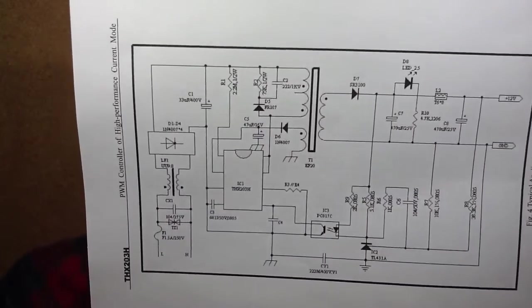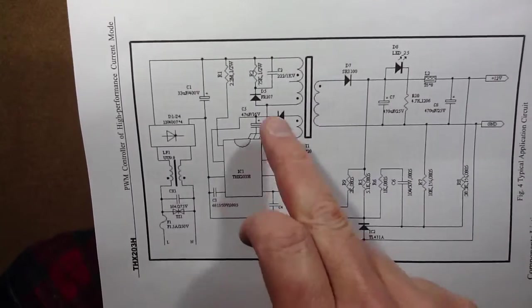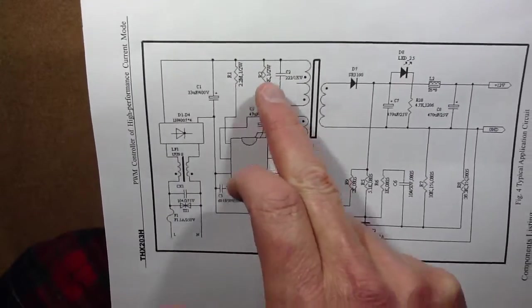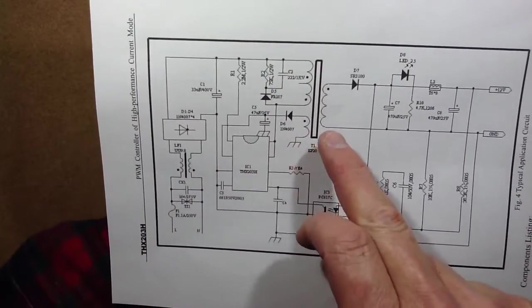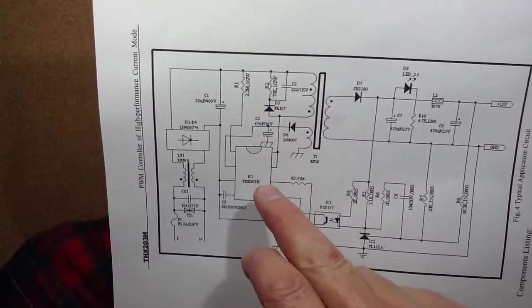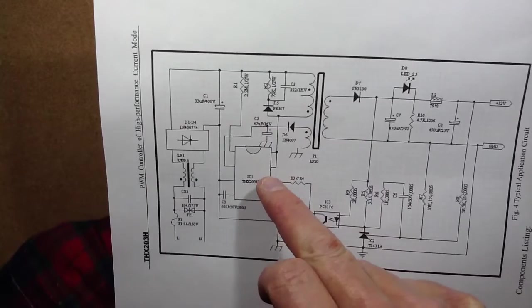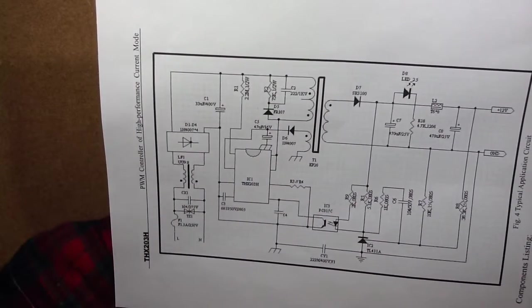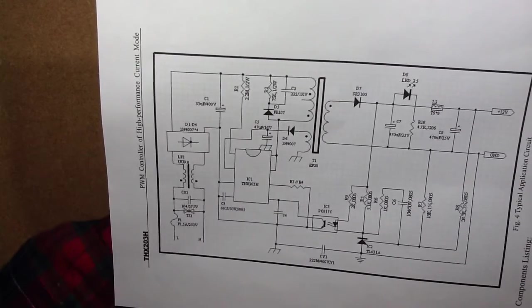It also shows clearly the little snubber network they put across the primary which is the diode, resistor and capacitor. Which is a sort of single directional snubber network effectively. It's probably maybe part forms a sort of resonance circuit. I'm not 100% sure about that.